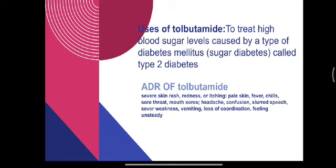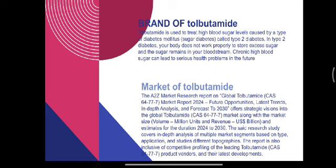Adverse Drug Reactions of Tolbutamide: severe skin rash, redness or itching, pale skin, fever, chills, sore throat, mouth sores, headache, confusion, slurred speech, severe weakness, vomiting, loss of coordination, and feeling unsteady.